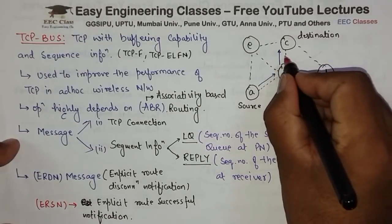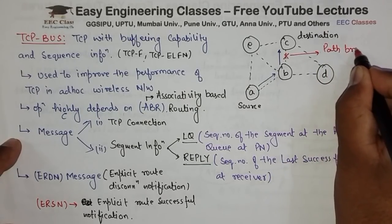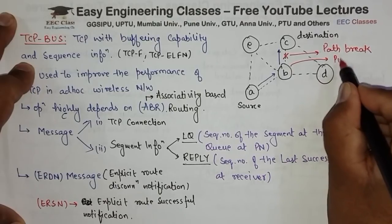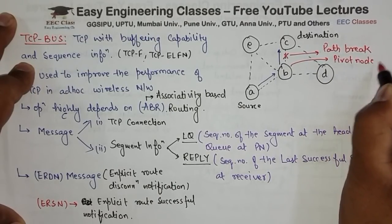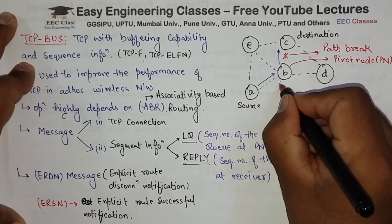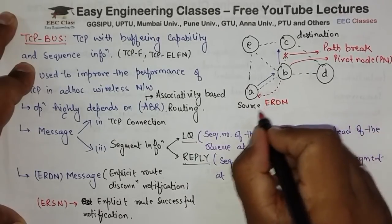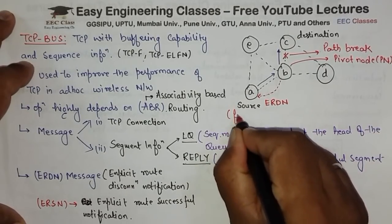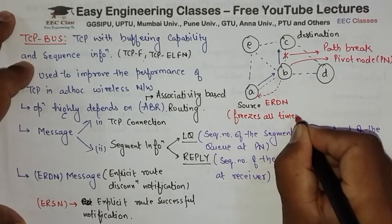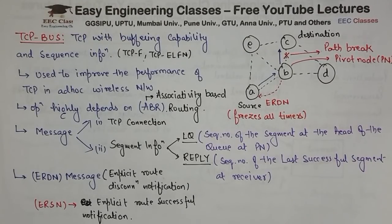Let us say ye path break ho gaya. Ab path break hua toh jo node detect kar raha hai path break ko, that node is called as the pivot node — ya is ko hum bol dete hain PN. Aur ye pivot node wapis sender tak ERDN message bhejegi. Now upon receiving the ERDN message, the source freezes and stops transmitting more packets.